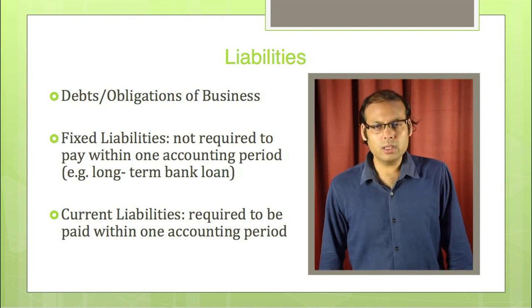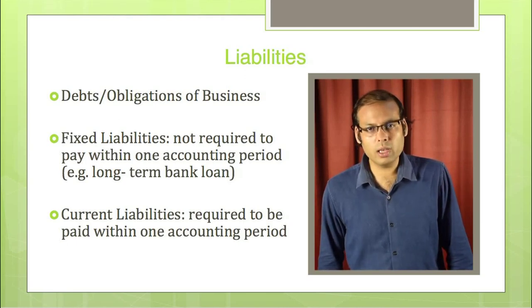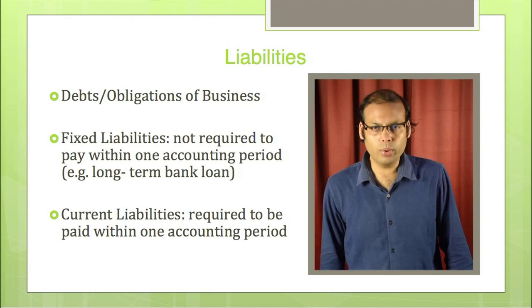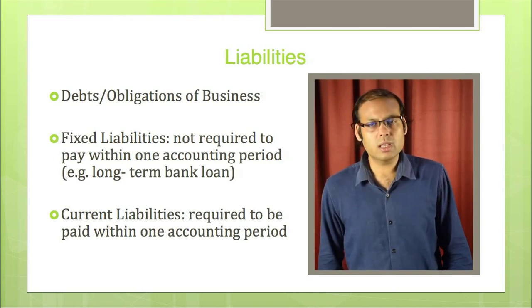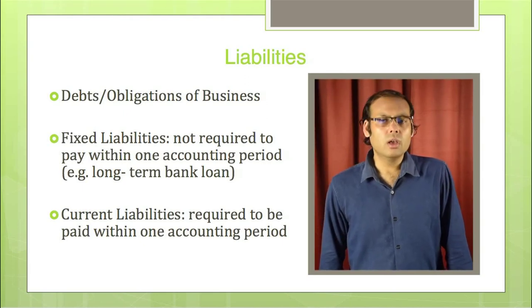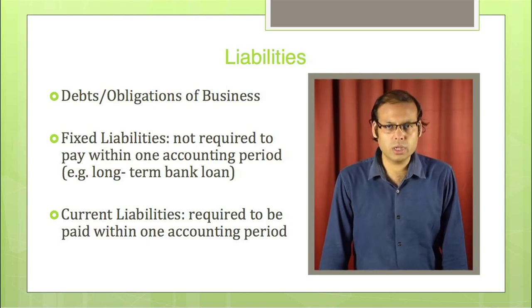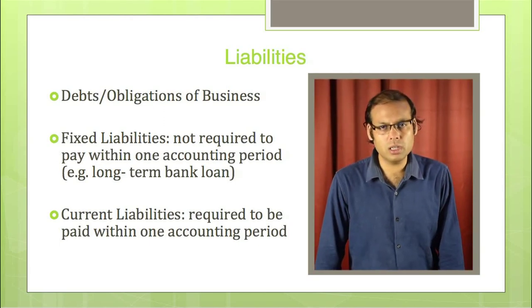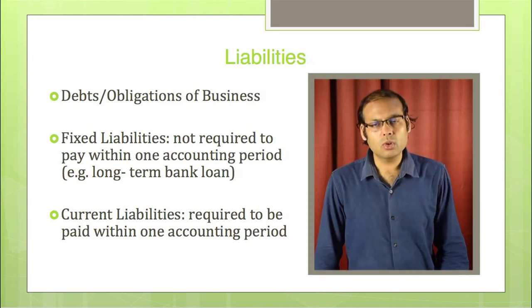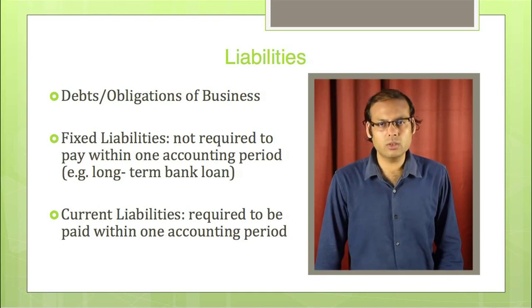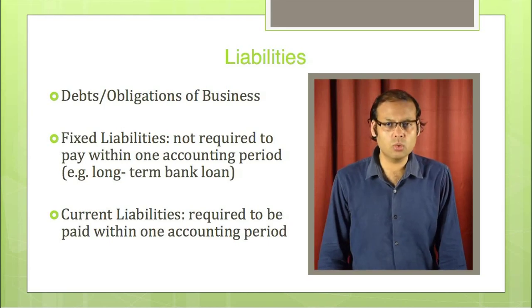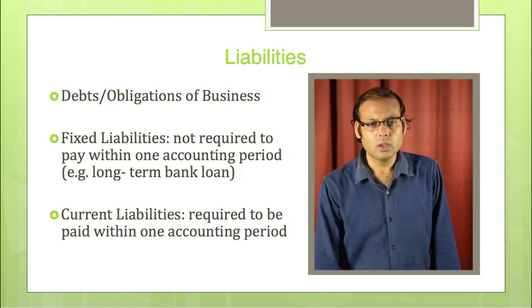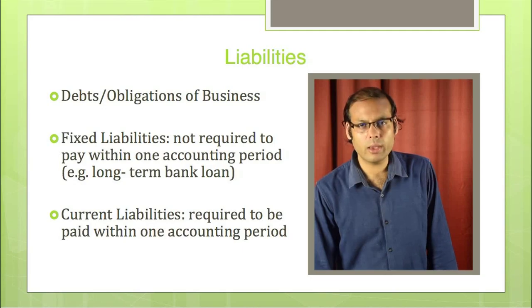Current liabilities are required to be paid within one accounting period — that is, within 12 months the business has to repay the liabilities. For example, if goods are purchased by your business on credit and you have to pay within 2 months, that is a current liability that must be paid within a very short period of time, within the accounting period. So, these are termed as current liabilities.